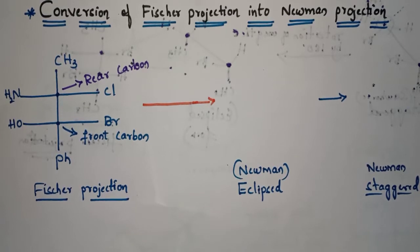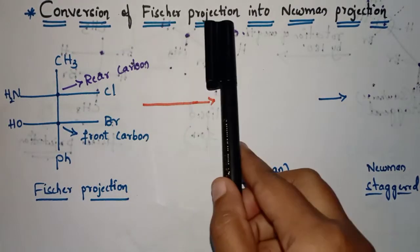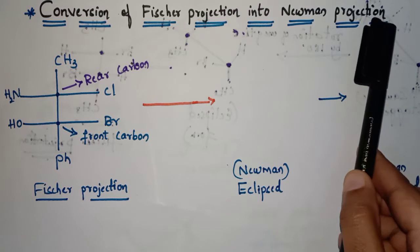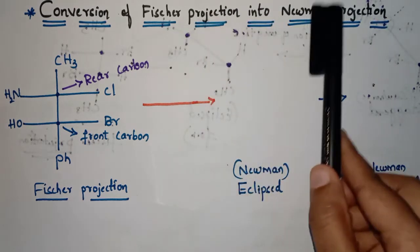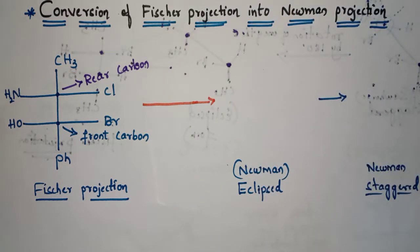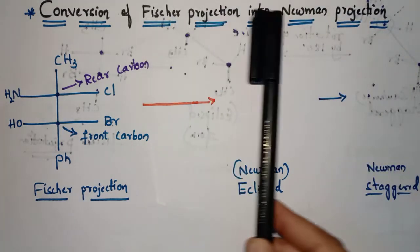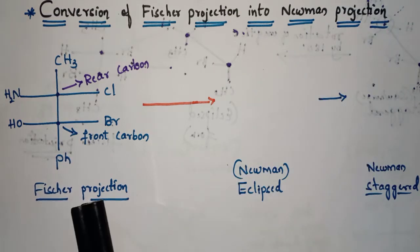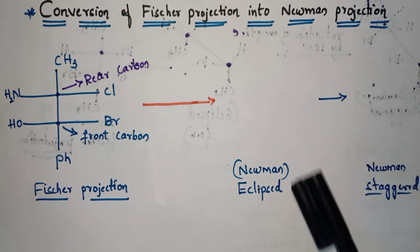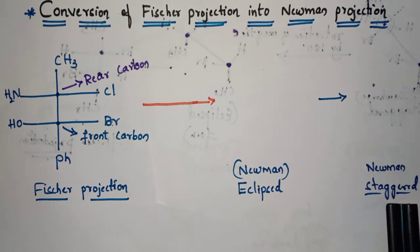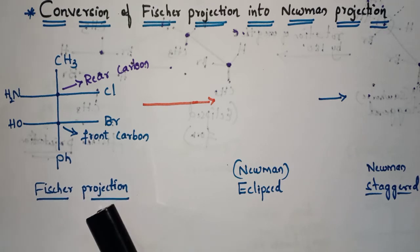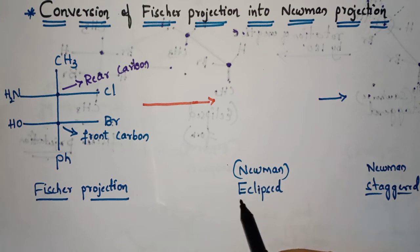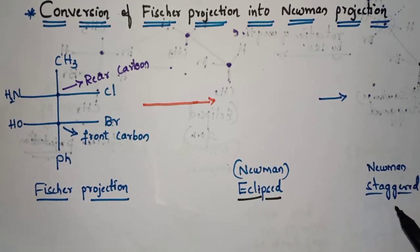In this video we are going to learn about conversion of Fisher projection into Newman projection. I will show you the easiest method to convert Fisher projection into Newman projection in two steps. First, the Fisher projection is converted into Newman eclipsed form, then it is converted into Newman staggered form.